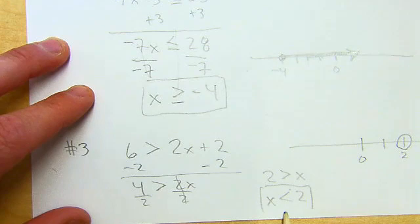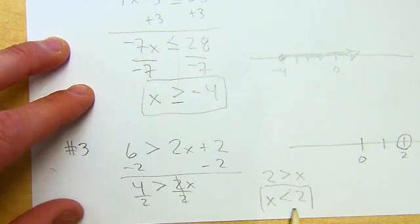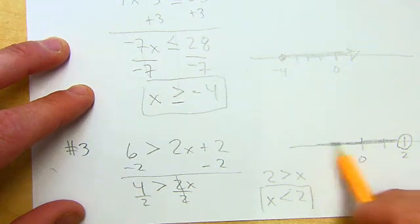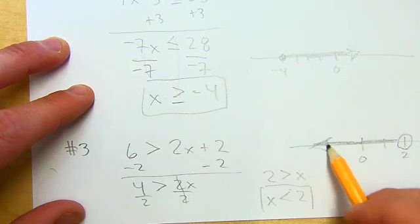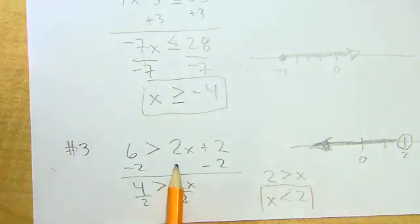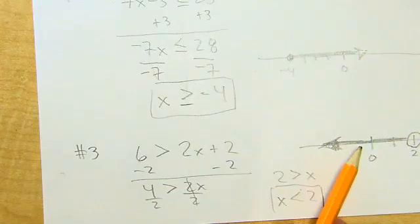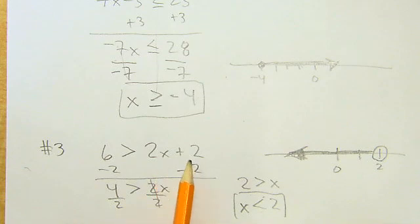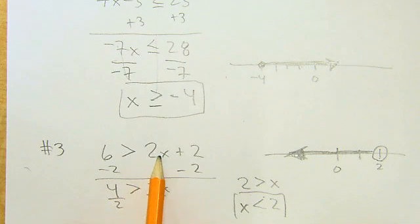So to graph that out: open circle because it's strictly less than, not less than or equal to. And less than means to the left. So anything less than 2. So again, if I plugged in 0 here, 0 should work, right, because it's on the darkened part. So 2 times 0 is 0, 0 plus 2 is 2. Is 2 less than 6, or is 6 greater than 2? Sure. Plug in 3.